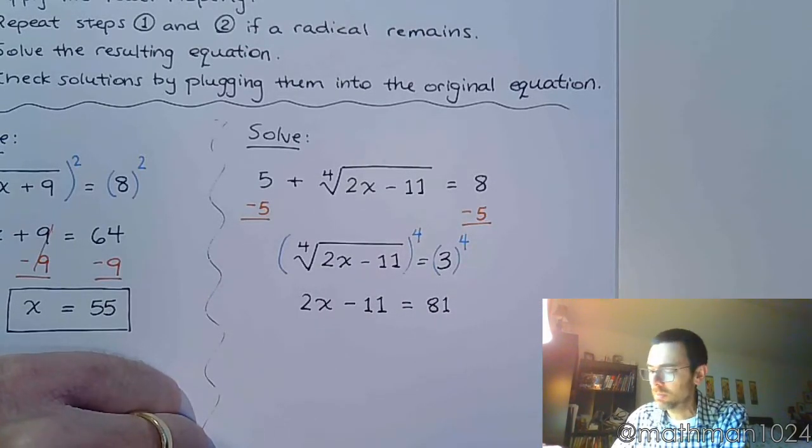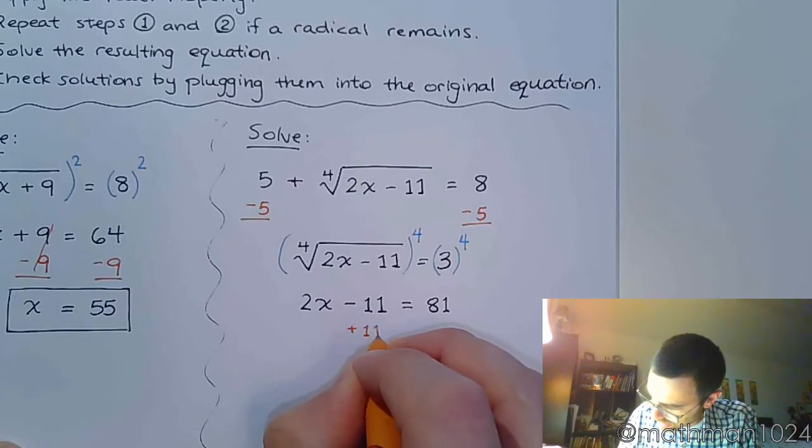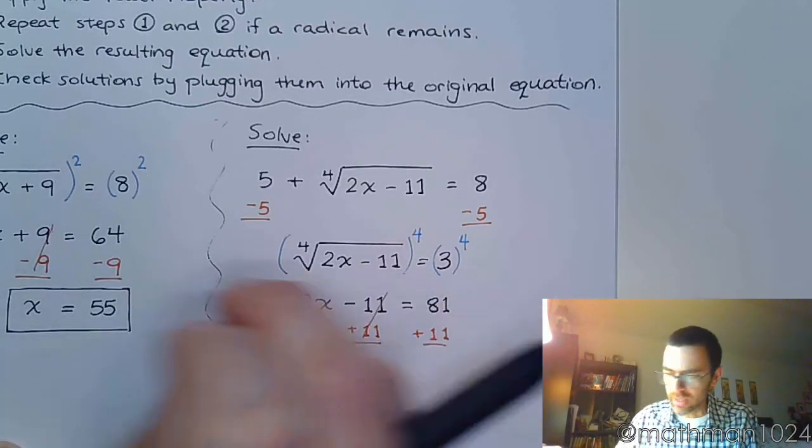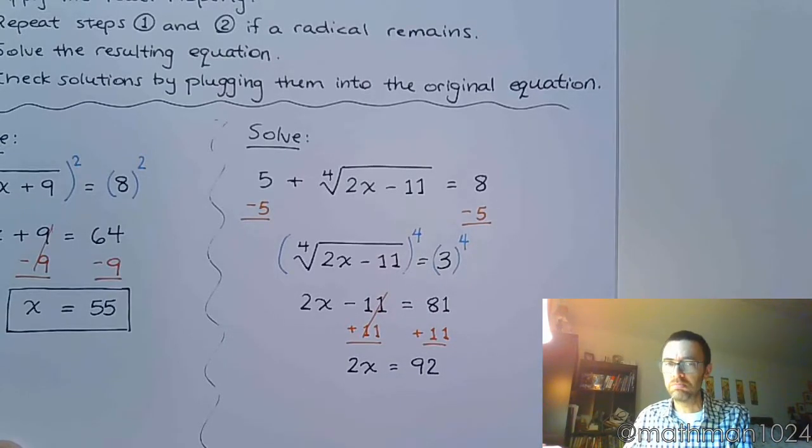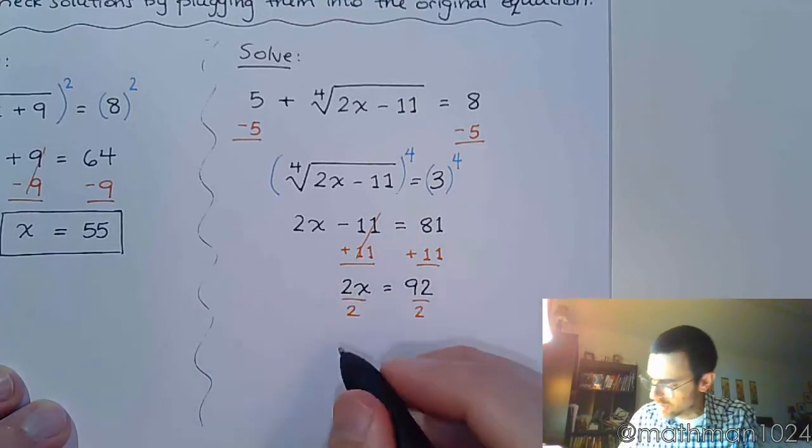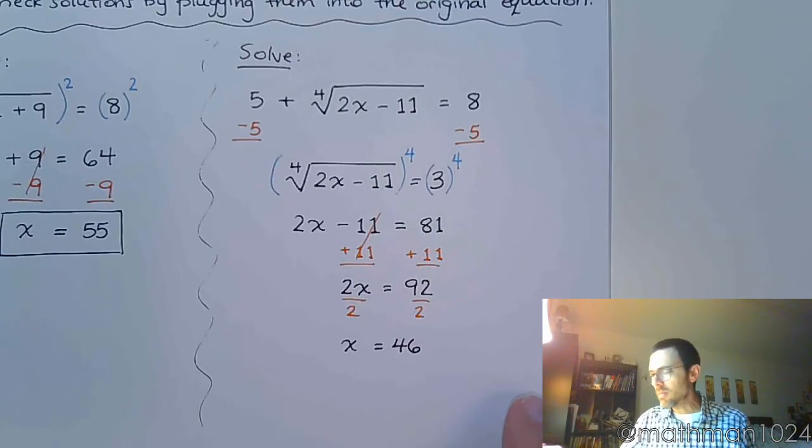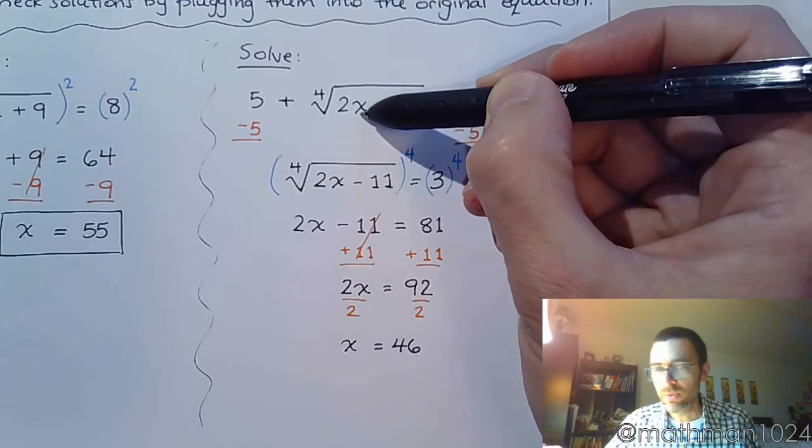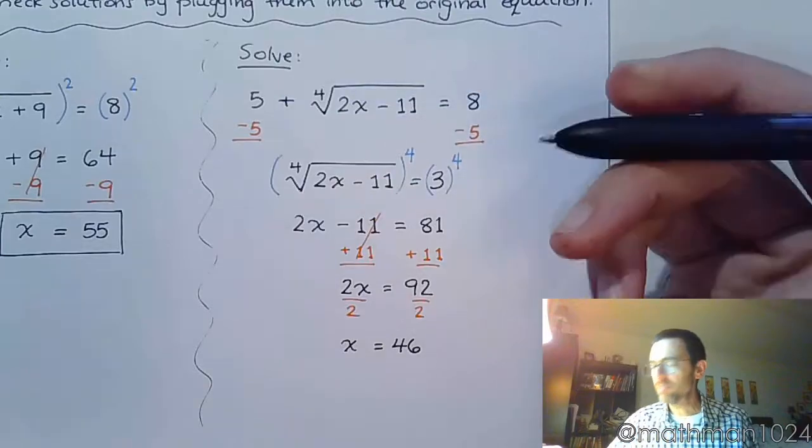At this point we just have a nice linear equation to solve, so get x by itself. I highly suggest that you show each step along the way - that way if you do make a mistake, hopefully your instructor can see that, can understand that you knew what you were doing, just made a careless mistake. Finish solving this by dividing both sides by 2, and x = 46. Again, checking this really shouldn't be too bad. If I plug in 46 up here, 2 times 46 is 92, 92 - 11 is 81, the fourth root of 81 is 3, 5 + 3 = 8.